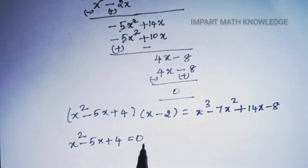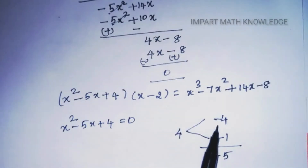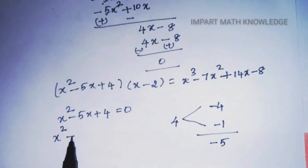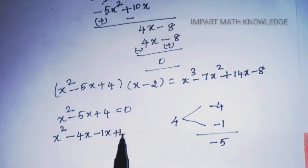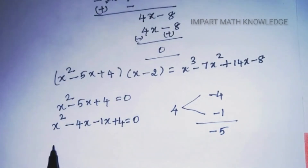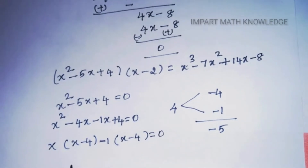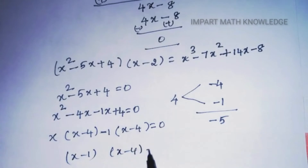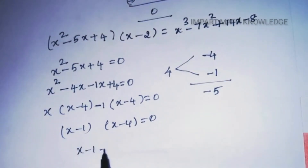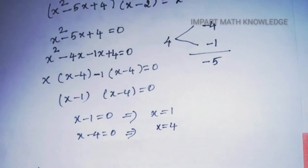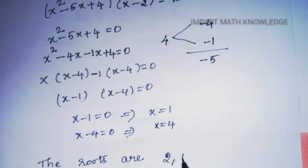Factorizing x² − 5x + 4 = 0: the two factors are −1 and −4, since (−1) + (−4) = −5 and (−1)(−4) = 4. So x² − 4x − x + 4 = 0, giving x(x − 4) − 1(x − 4) = 0, hence (x − 1)(x − 4) = 0. Therefore x = 1 and x = 4. The three roots are 1, 2, and 4.